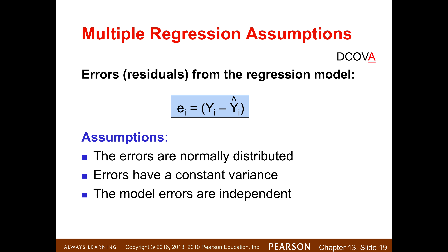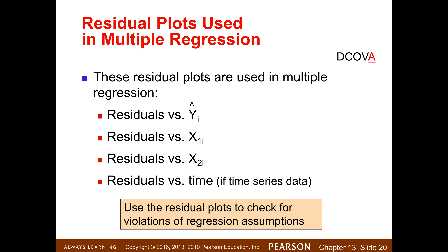Our assumptions focus on errors or residuals — the difference between observed and predicted Y values. The assumptions are: errors are normally distributed, errors have constant variance, and model errors are independent. To check these, we look at residual plots: residuals versus predicted values, residuals versus the first predictor, residuals versus the second predictor, and in time series analysis, residuals over time — though we won't get into that in this set of videos.